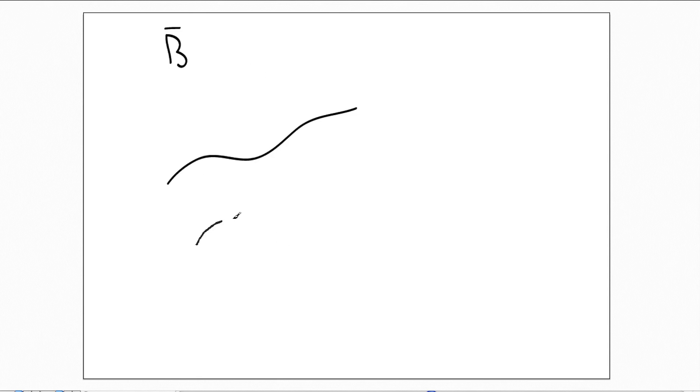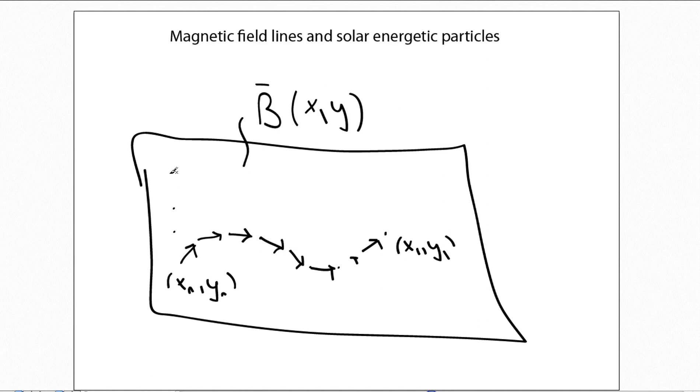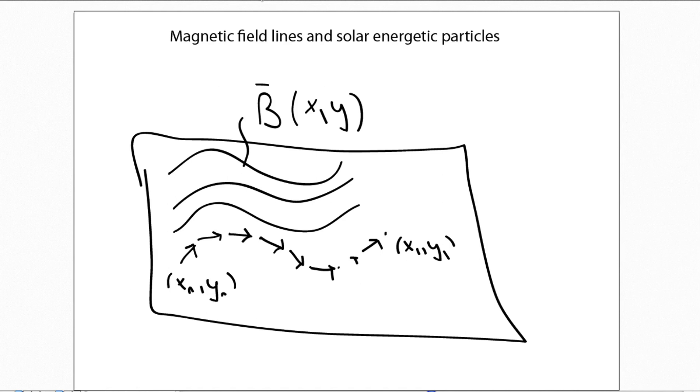Now that we have discussed what a field line is, let's discuss how it relates to the propagation of charged particles, and how this connects to solar energetic particles. Assume we have a magnetic field B with a family of magnetic field lines. By selecting a number of different initial points and tracing the magnetic field from each, you can build a family of magnetic field lines, which is what we are drawing here.